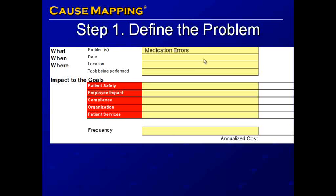Because this is a proactive map, we do not capture a specific date. We'll just write that we're doing a proactive cause map. We are going to limit our analysis to health care facilities and the task that is being performed: prescribing, preparing, and giving medication.